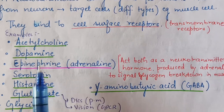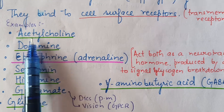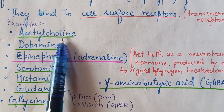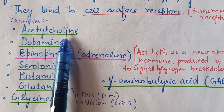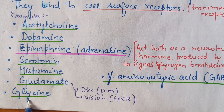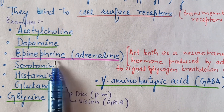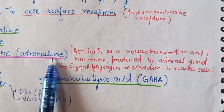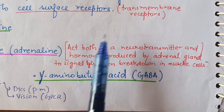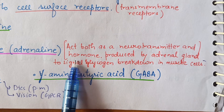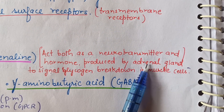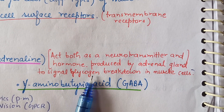Here are a few examples of neurotransmitters. The main example is acetylcholine, which is very important and also plays a role in the nitric oxide signaling pathway. Other examples include dopamine, epinephrine, serotonin, histamine, glutamate, and glycine. Epinephrine, also called adrenaline, is a neurotransmitter that also works as a hormone. It is produced by the adrenal glands present on the kidneys, and its main function is to signal glycogen breakdown in muscle cells.